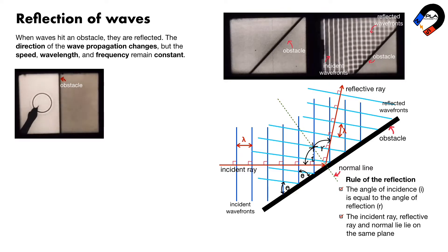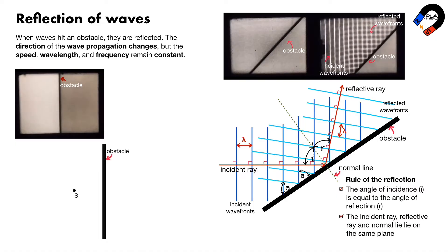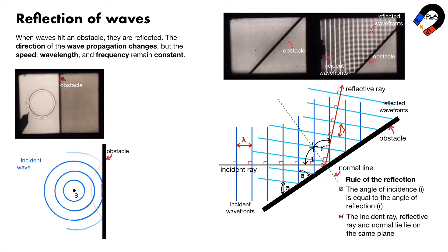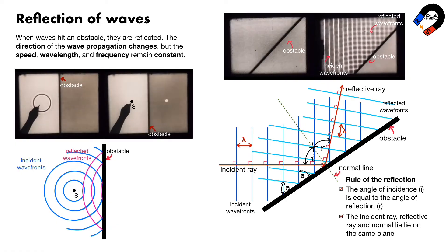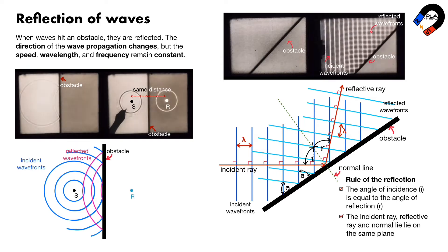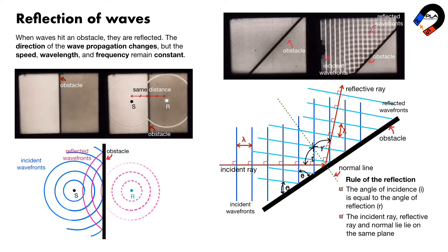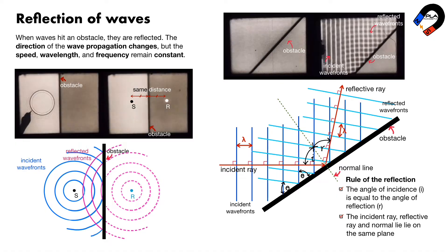Circular wave fronts can be reflected at a flat obstacle. The circular wave fronts are created from source S and reflect at the flat obstacle. The image of the source, R, is created behind the obstacle, from which the reflected waves appear to come.